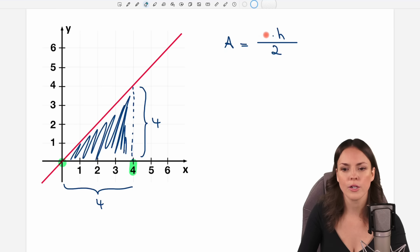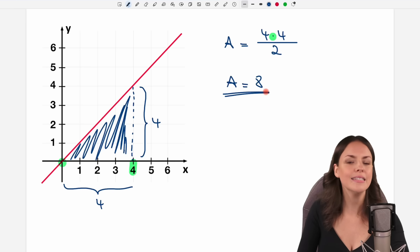If I insert 4 for the base and 4 for the height, I get an area of 4 times 4, which equals 16, over 2 equals 8. So why should I need integrals to find this area?